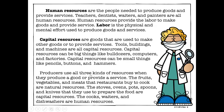Producers use all three kinds of resources when they produce a good or provide a service. For example, in a restaurant: the fruits, vegetables, and meats that restaurants buy to cook are natural resources, because they come from the earth. The stoves, ovens, pots, spoons, and knives used to prepare the food are capital resources. The cooks, waiters, and dishwashers are human resources. So in a restaurant, there are three kinds of resources being used.